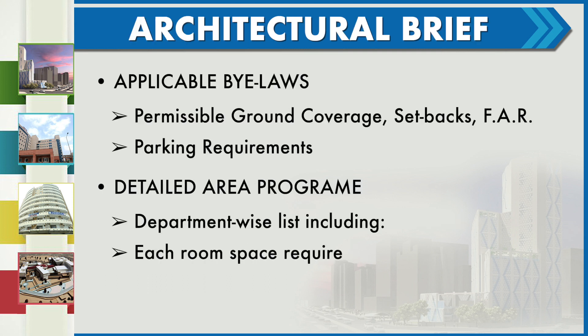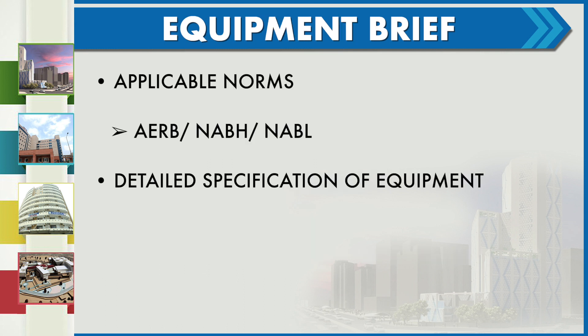The architectural brief will include applicable local bylaws for the particular project — for example, permissible ground coverage, FAR, setbacks, and parking requirements. The architectural brief will also include a detailed area program which lists departments, each room and space requirement, and their functional descriptions.